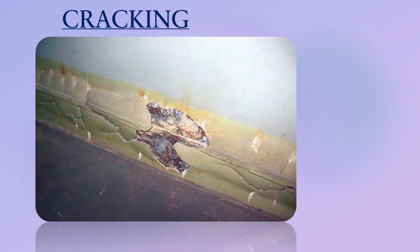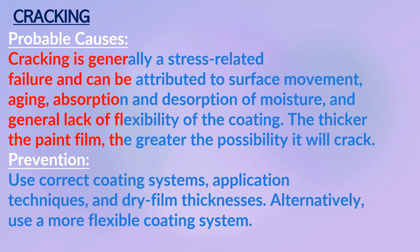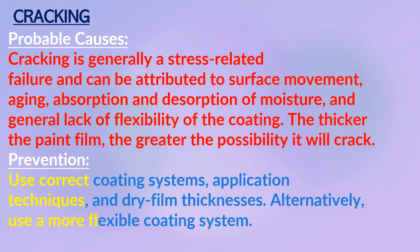Cracking: the splitting of a dry paint film through at least one coat to form visible cracks, which may penetrate down to the substrate. Cracks come in several forms, from minute cracking to severe cracking. Probable causes: cracking is generally a stress-related failure and can be attributed to surface movement, aging, absorption of moisture, and general lack of flexibility of the coating. Prevention: the use of correct coating system, application techniques, and dry film thickness.